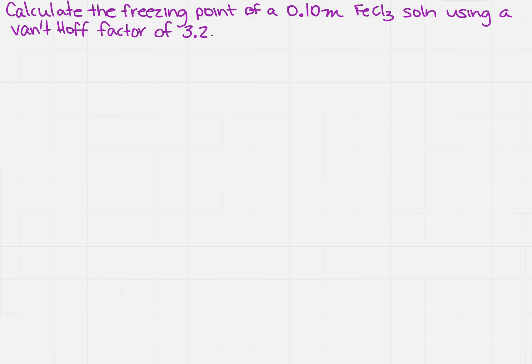I want to calculate the freezing point of a 0.1 molality iron 3 chloride solution using a van't Hoff factor of 3.2. So the key words here are we want the freezing point. They also give me the molality and the van't Hoff factor.